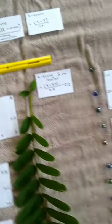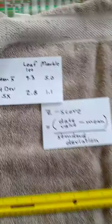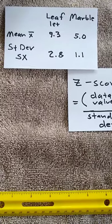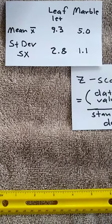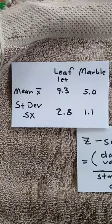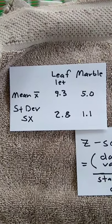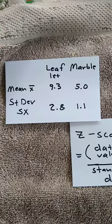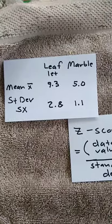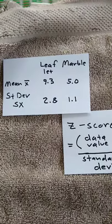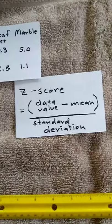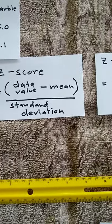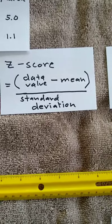For the leaflets, the mean length is 9.3 centimeters. The standard deviation is 2.8 centimeters. For the marbles, the average is 5. The standard deviation for the marbles is 1.1 grams. The z-score is calculated by taking a particular data value you're interested in, minus the mean, and then dividing by the standard deviation.